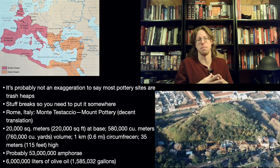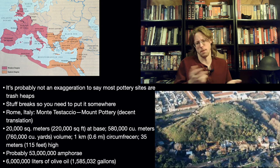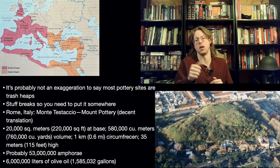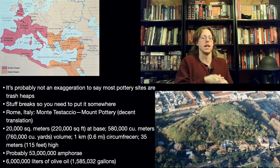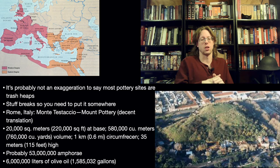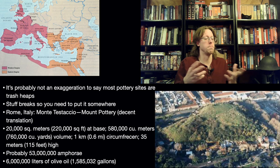It's not an exaggeration to say that most archaeological sites dealing with pottery are probably garbage pits — stuff breaks, you've got to put it somewhere. I don't speak Italian so I'm not going to butcher this, but this big mound you see in the bottom right-hand corner is, you know, Mount Pottery — that's a decent translation from Italian to English. I want you to keep in mind that it's a big hill and the stuff around it are modern-day houses and buildings. To get an idea of how big this thing is: it's 20,000 square meters, 580,000 cubic meters in volume, a kilometer in circumference and 35 meters high. This thing is giant. Probably, based on the amount of shards we have, if you were to reconstruct everything, something like 53 million amphorae.